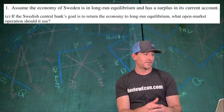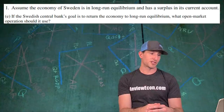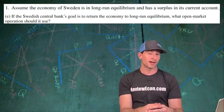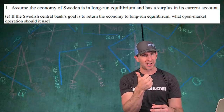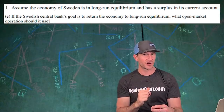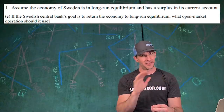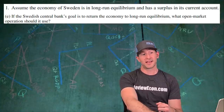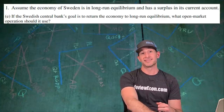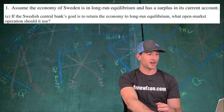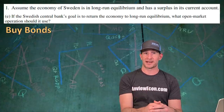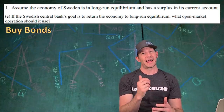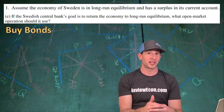If the Swedish central bank's goal is to return the economy to long-run equilibrium, what open market operation should it use? Remember, open market operations are just two things: buying bonds and selling bonds. Since our concern is the unemployment rate being too high — thanks to that leftward shift of aggregate demand — buying bonds will increase the money supply, driving down interest rates, increasing gross investment and some consumer spending. That will increase the aggregate demand curve, closing the recessionary gap.